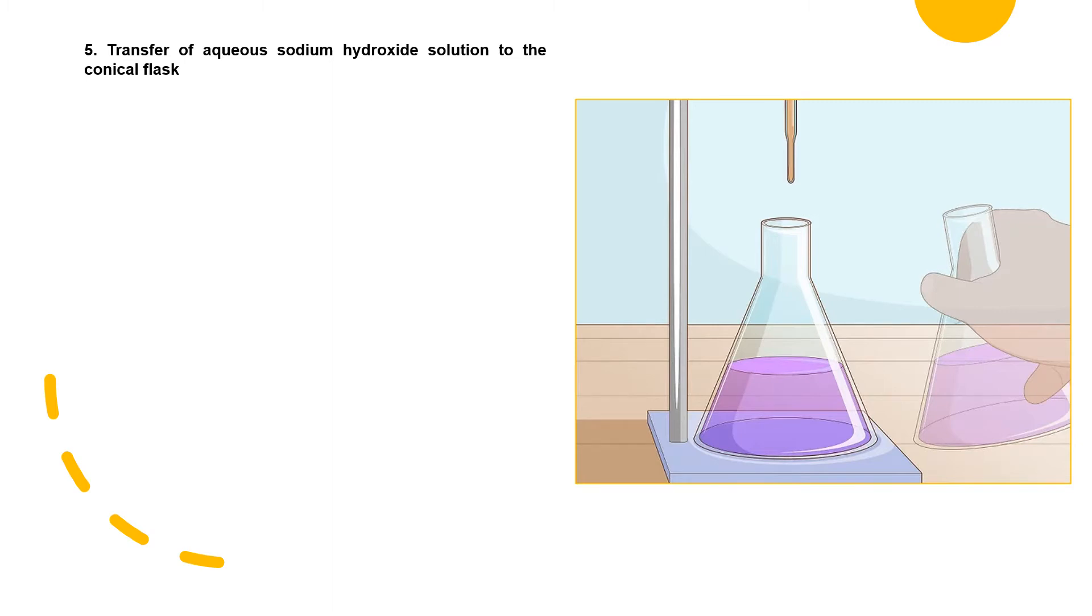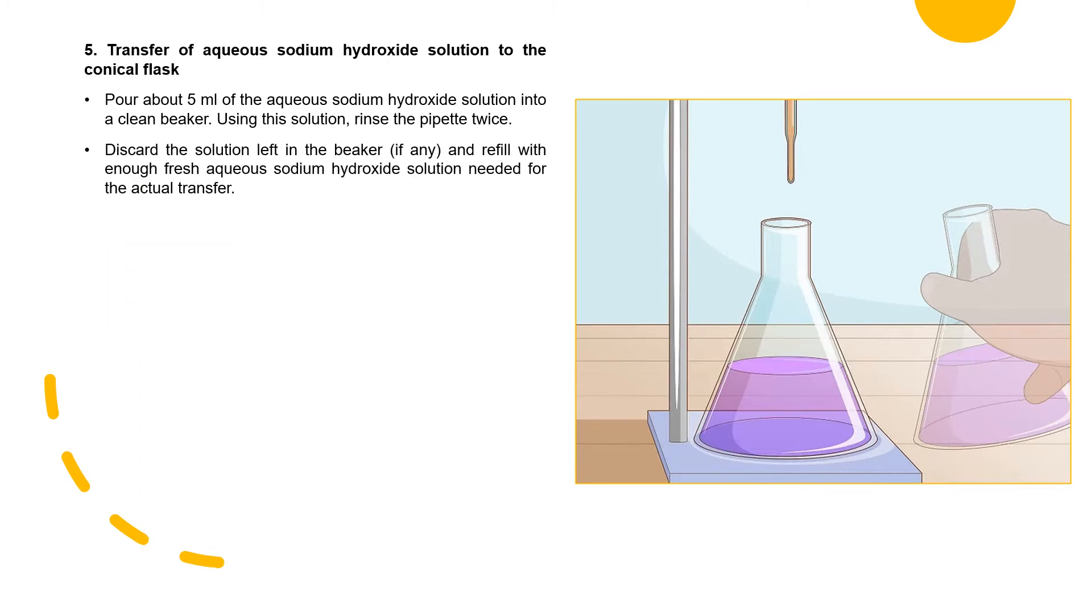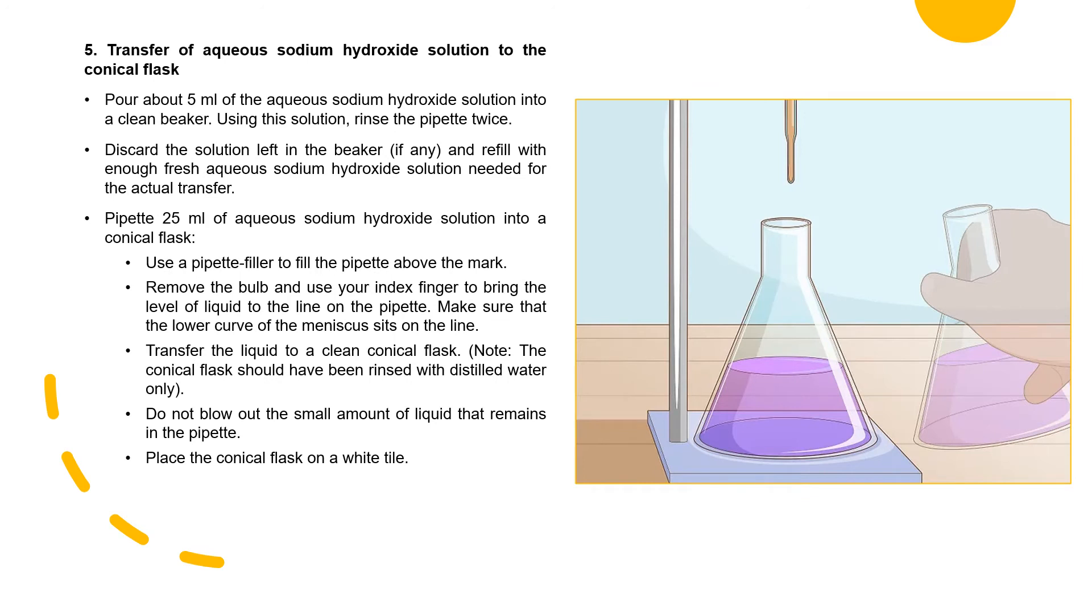Transferring of aqueous sodium hydroxide solution to the conical flask. Pour about 5 ml of aqueous sodium hydroxide solution into a clean beaker. Use this solution to rinse the pipette. Discard the solution left in the beaker and refill with enough fresh aqueous sodium hydroxide solution needed for actual transfer. Then pipette 25 ml of sodium hydroxide solution into a conical flask. Use a pipette filler to fill the pipette above the mark. Then you must remove the bulb and use your index finger to bring the level of the liquid to the line on the pipette. Transfer the liquid to the clean conical flask and make sure to not blow out the small amount of liquid that remains in the pipette. Place the conical flask on a white tile. Using a wash bottle with distilled water, flush down the droplets of aqueous sodium hydroxide solution remaining on the inside of the wall of the flask.